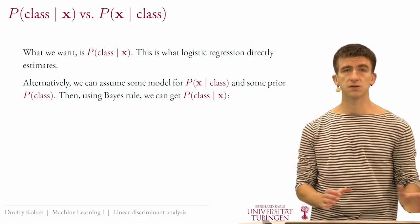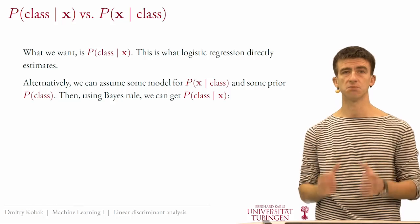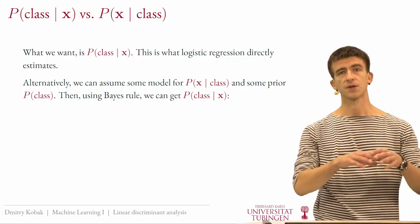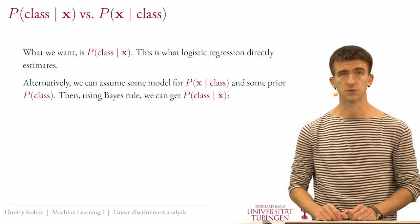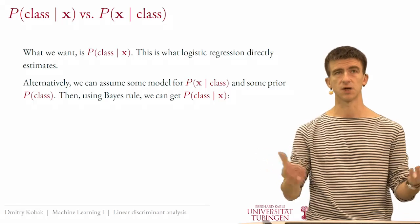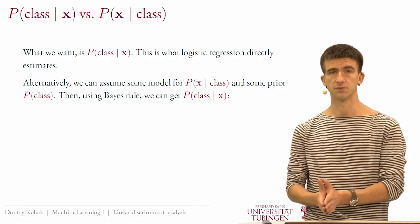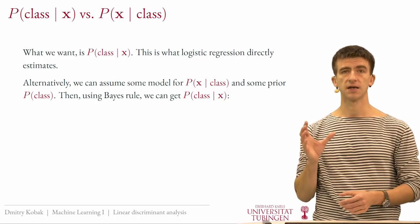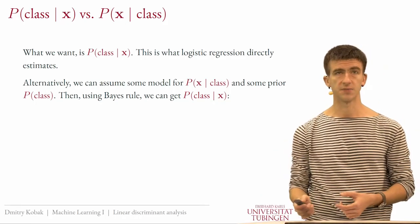In this lecture, we approach the same thing the other way around — a bit of a roundabout way. We assume some model for each class: a probability distribution of x's in class zero and a probability distribution in class one. Assuming this model and some prior probabilities for each class, we use Bayes' rule to get the probability of a class given observed data, arriving at the same object as logistic regression but via Bayes' theorem.